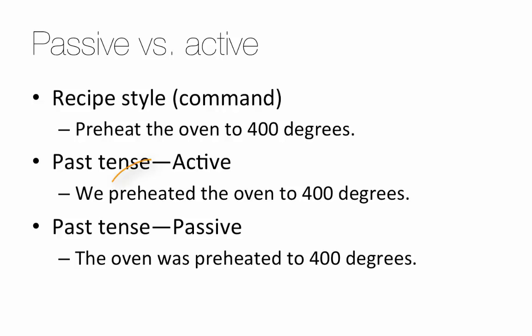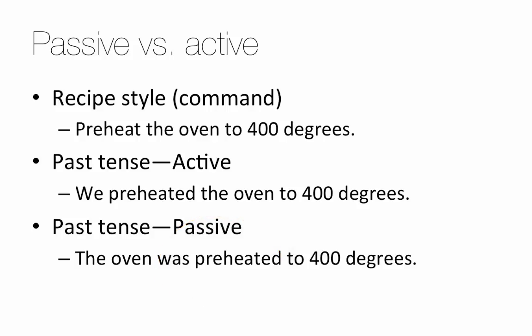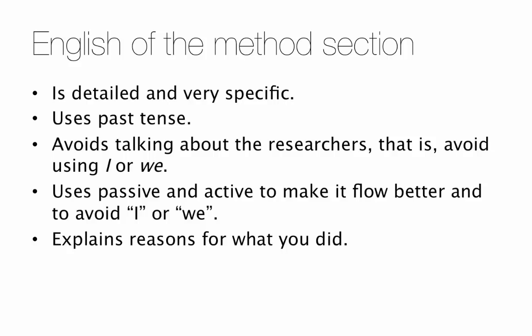Now it's using past tense: 'preheated.' And then you can avoid using 'we' by changing it to a passive sentence. Instead of 'preheated,' you say 'was preheated.' The oven was preheated to 400 degrees. I'll show you more examples of this as we go into the actual research paper.